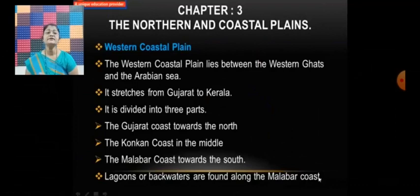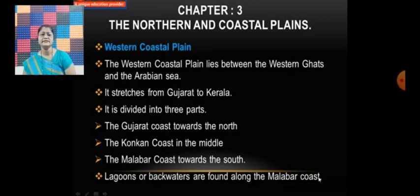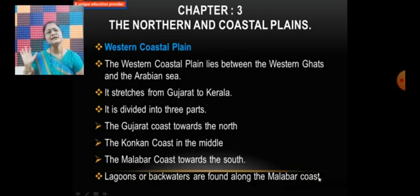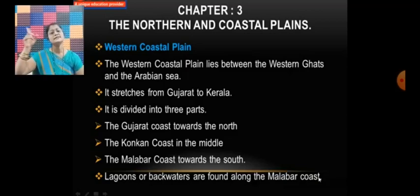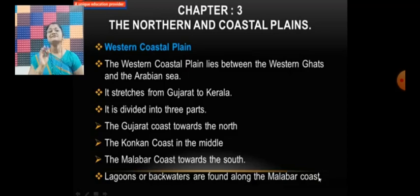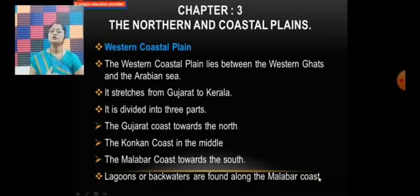Now let us talk about the western coastal plain. The western coastal plain lies between the Western Ghats and the Arabian Sea. It is stretched from Gujarat to Kerala and is divided into three parts. The Gujarat coast towards the north is the first part.